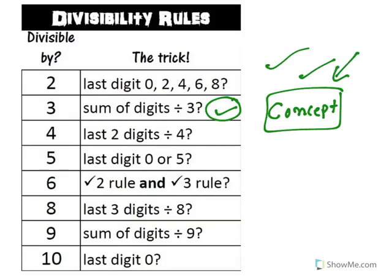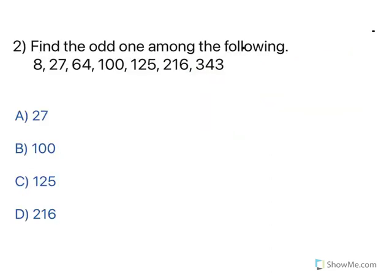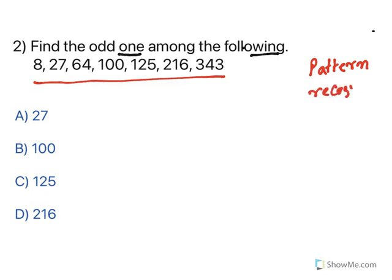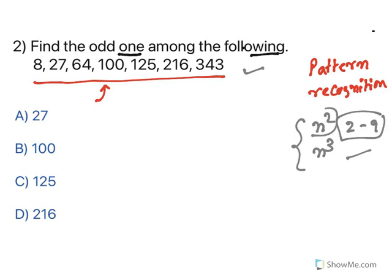So you need to learn these concepts in order to answer such questions. Moving to the next one: find the odd one among the following series. The second strategy you need is pattern recognition. All these numbers follow a particular pattern and you need to identify what that pattern is. In order to do number series questions you must know squares and cubes of numbers from 2 to 9 — the moment you see a number, you should identify whether it is a square or cube.